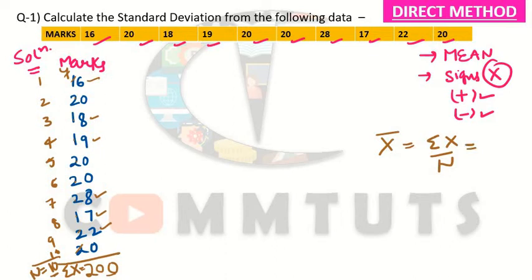Now we calculate x̄. Summation X is 200 and the number of observations N is 10. So x̄ = 200 / 10 = 20. The arithmetic mean is 20.